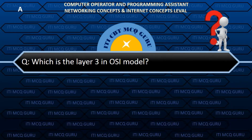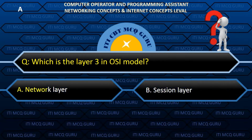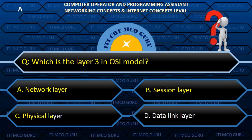Which is layer 3 in the OSI model? A. Network layer.